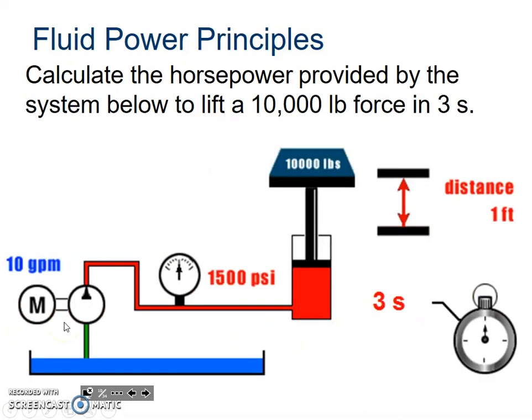So work on this problem. Calculate the horsepower provided by the system below to lift 10,000 foot pounds of force in three seconds. Okay, so we put it in. We've got 10 gallons coming in at 1,500 psi divided by the 1,714. That's going to give us 8.75 horsepower.